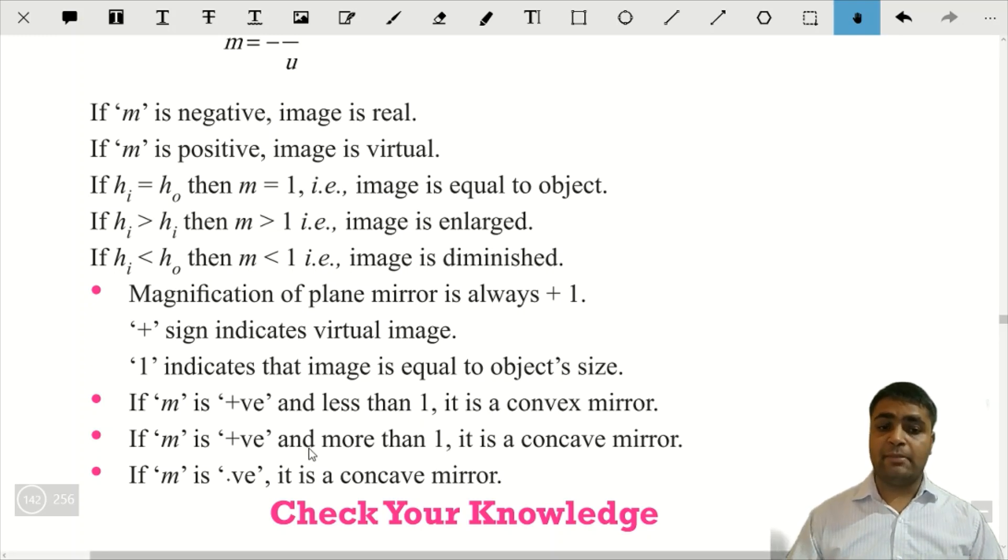Dusra point. If m is positive, agar m positive hai, but, joh m hai, woh more than one hai. Toh iska matlab woh kya hai? Concave mirror. Concave mirror ki case mein dekhna, ki joh object ke size se comparatively, joh image ka size tha, woh bada tha. Toh image ka size bada hoga, toh is wajah se joh value hogi magnification ki, woh more than badi hai.